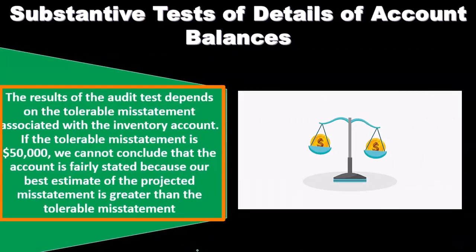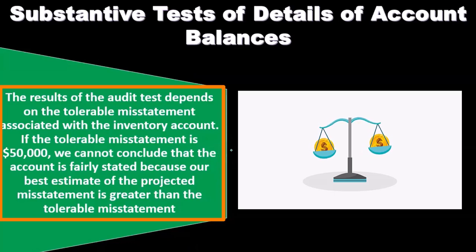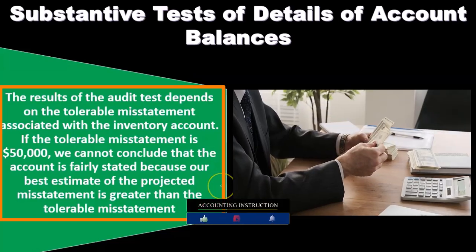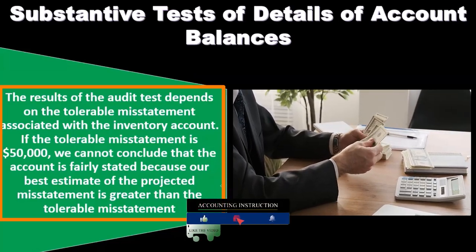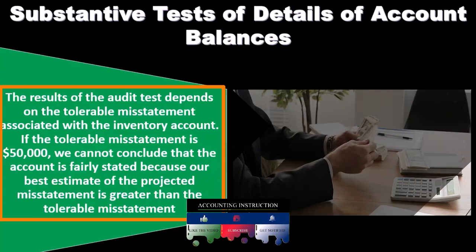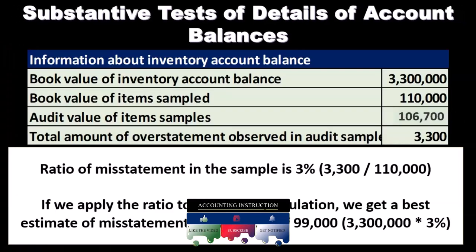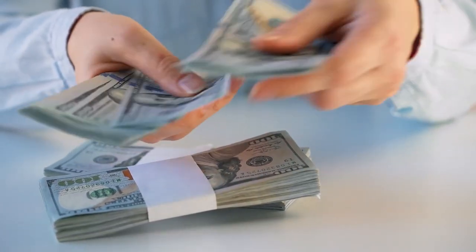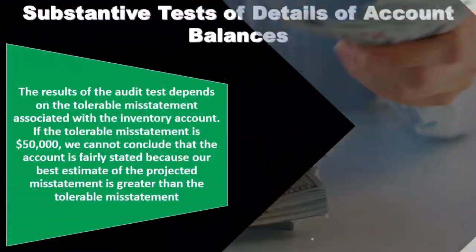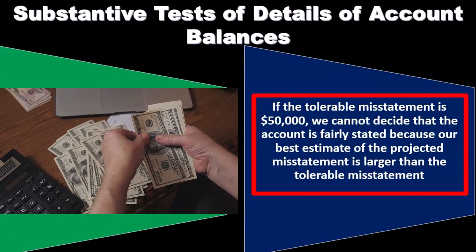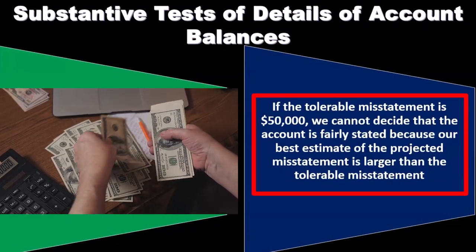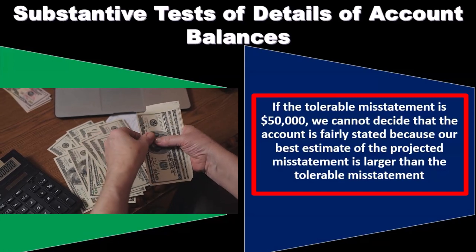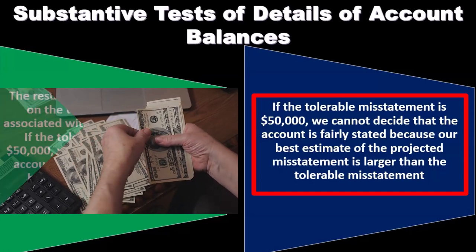The result of the audit test depends on the tolerable misstatement associated with the inventory account. If the tolerable misstatement is $50,000, we cannot conclude that the account is fairly stated because our best estimate of the projected misstatement — $99,000 — is greater than the tolerable misstatement of $50,000. Therefore, we cannot decide that the account is fairly stated because our best estimate of the projected misstatement is larger than the tolerable misstatement.